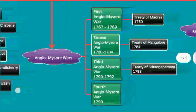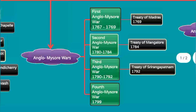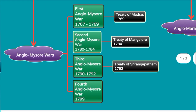Anglo-Mysore Wars: First Anglo-Mysore War 1767–1769, ended with Treaty of Madras. Second Anglo-Mysore War ended with Treaty of Mangalore. Third Anglo-Mysore War 1792, ended with Treaty of Srirangapatnam. Fourth Anglo-Mysore War, 1799.